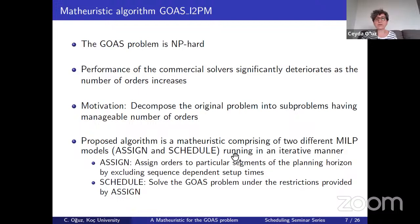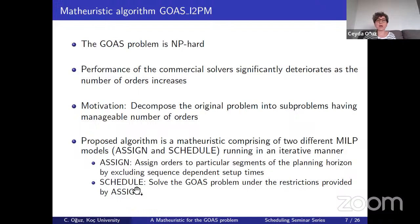We call this an iterative two-phase math heuristic algorithm, with assign and schedule modules. Since the problem requires simultaneous decisions, we use a natural decomposition: in the first phase, we focus on assignment of orders; in the second phase, we focus on scheduling. We use these modules iteratively until we hit the stopping condition. In the first phase, we assign orders to time segments of the planning horizon, excluding sequence-dependent setup times explicitly but including them implicitly. Then the overall problem is solved under assignment restrictions in the second phase, creating a schedule, which is fed back to the assignment stage.